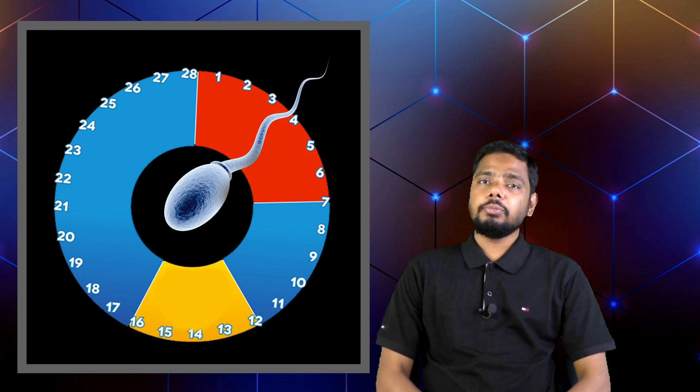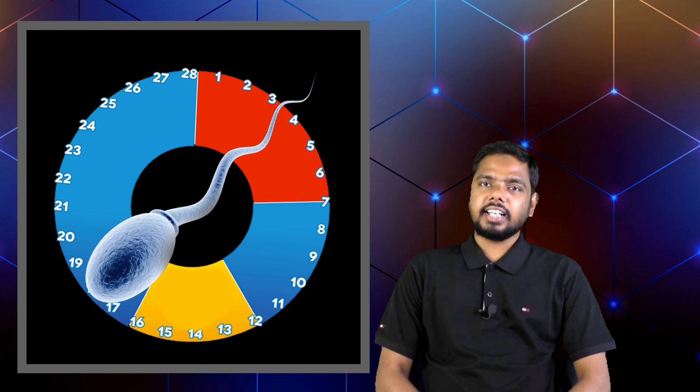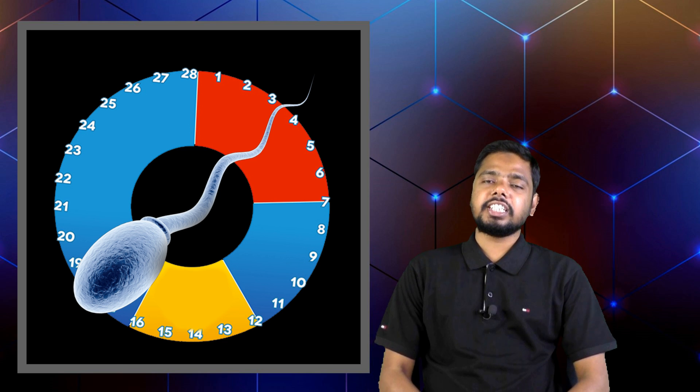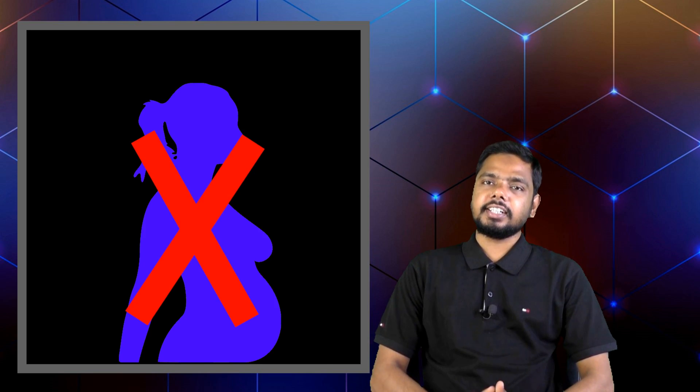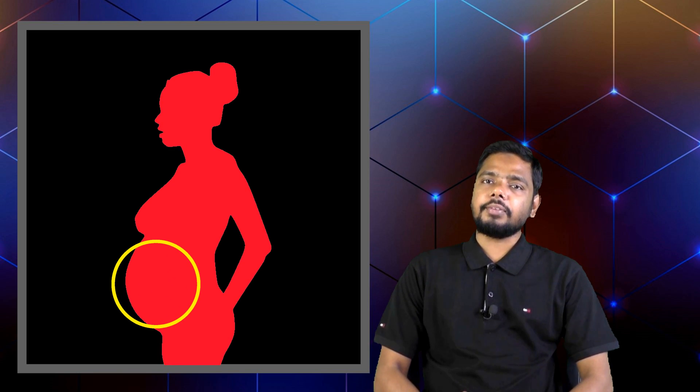Ovulation is connected to pregnancy. When women get ovulation, they release an egg to meet with a sperm. But the period is not connected to pregnancy — the women's body discharges blood during the period time. If women have contact with their partner during ovulation, she can become pregnant. But if a woman has contact with her partner during her period, she cannot become pregnant.